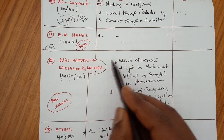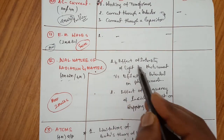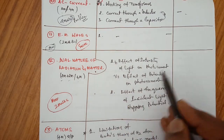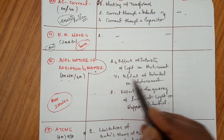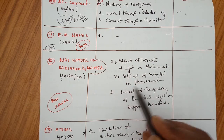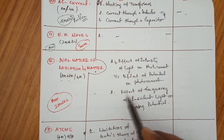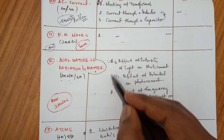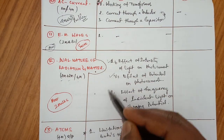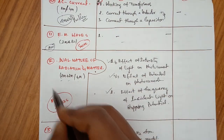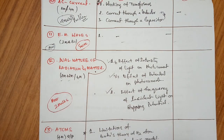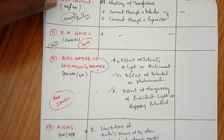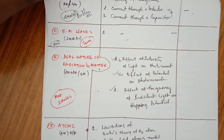If you want to prepare the 4 marks from Dual Nature of Radiation and Matter: effect of intensity of light on photocurrent; effect of potential on photocurrent; effect of frequency of light on stopping potential. Go through the 2 marks questions from the dual nature of radiation and matter, and problems will also be there.